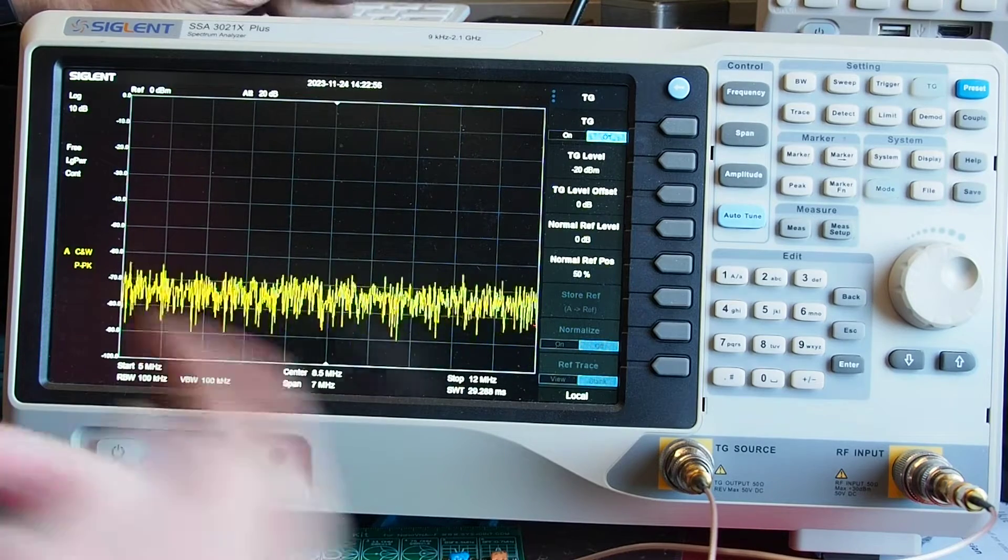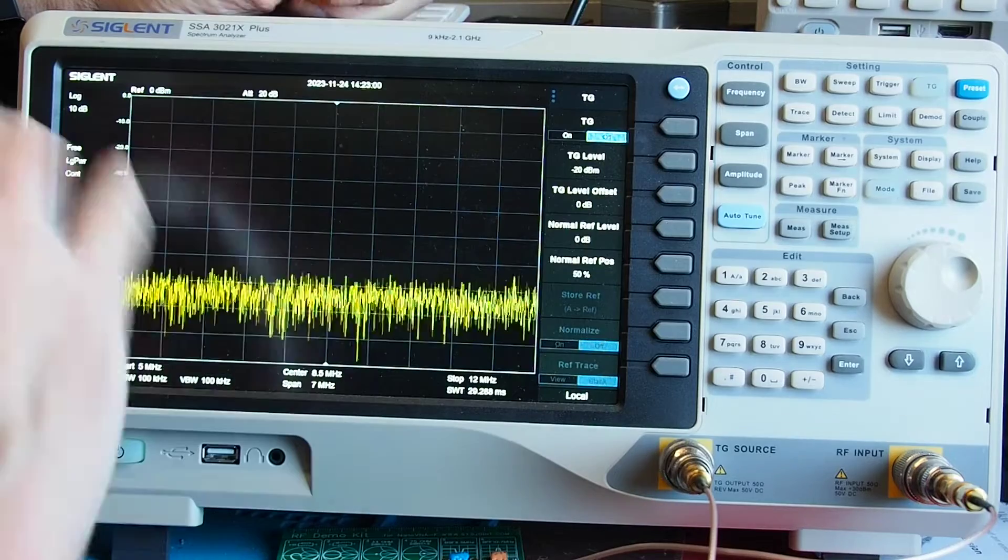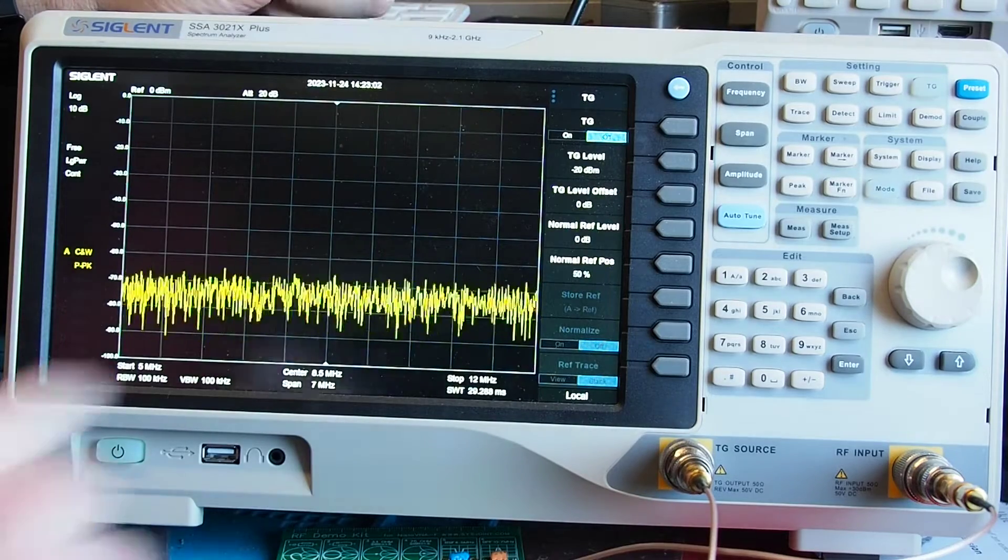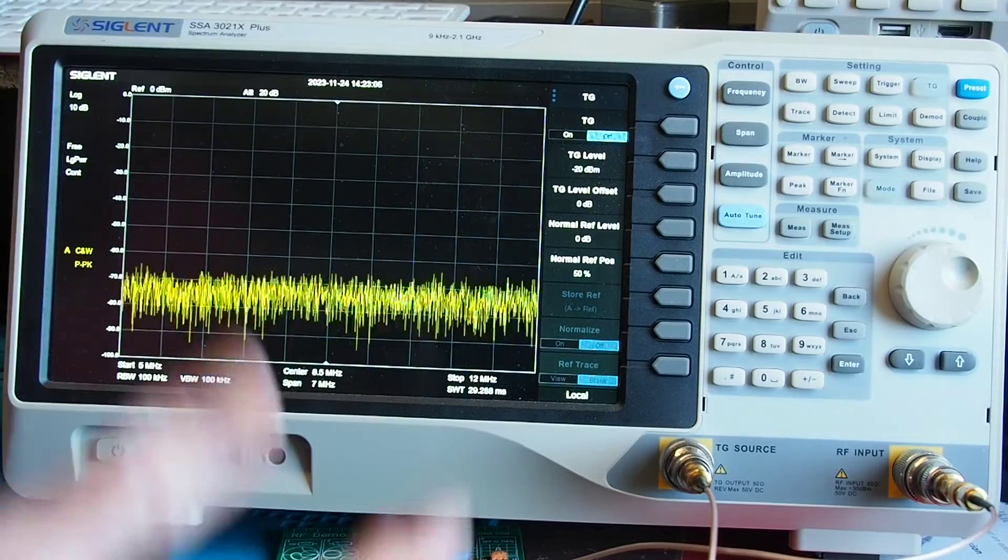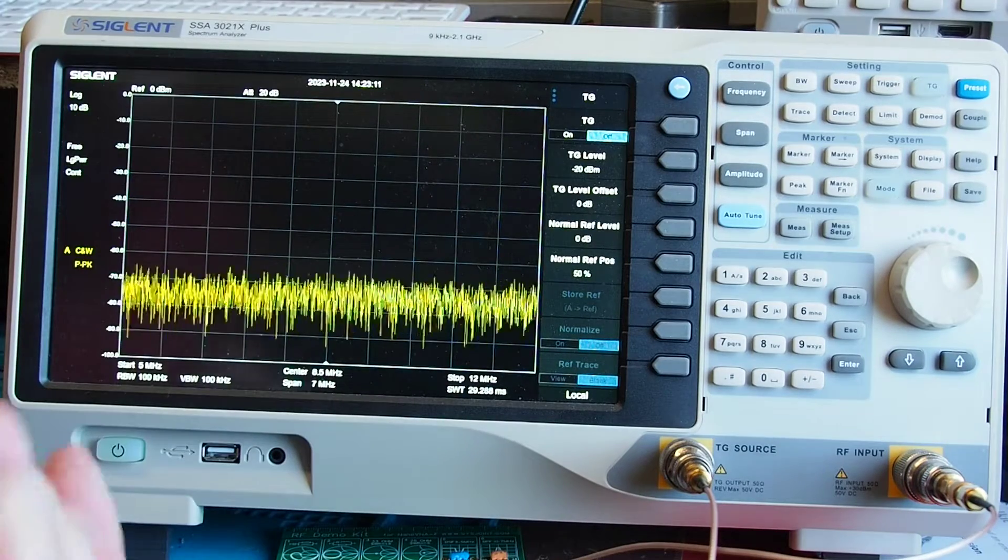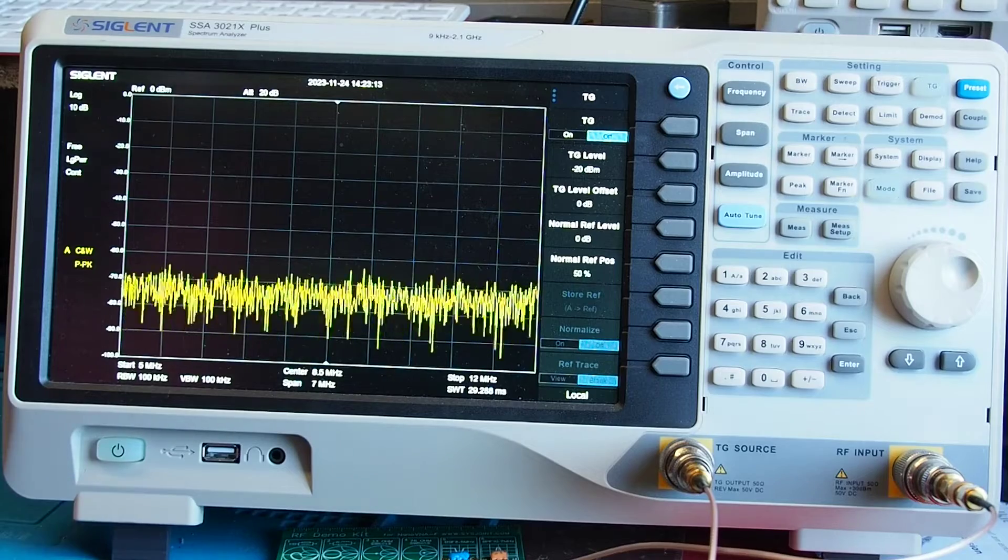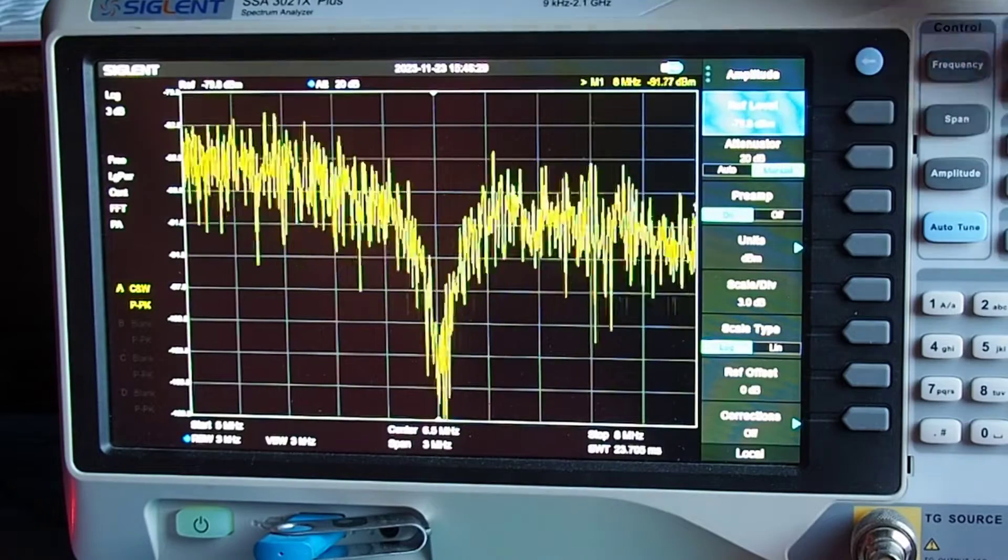Now you might recall last time when we turned on the noise bridge we had a quite a confused trace and we had to use the average function to sort out that random noise and actually produce a more meaningful trace.